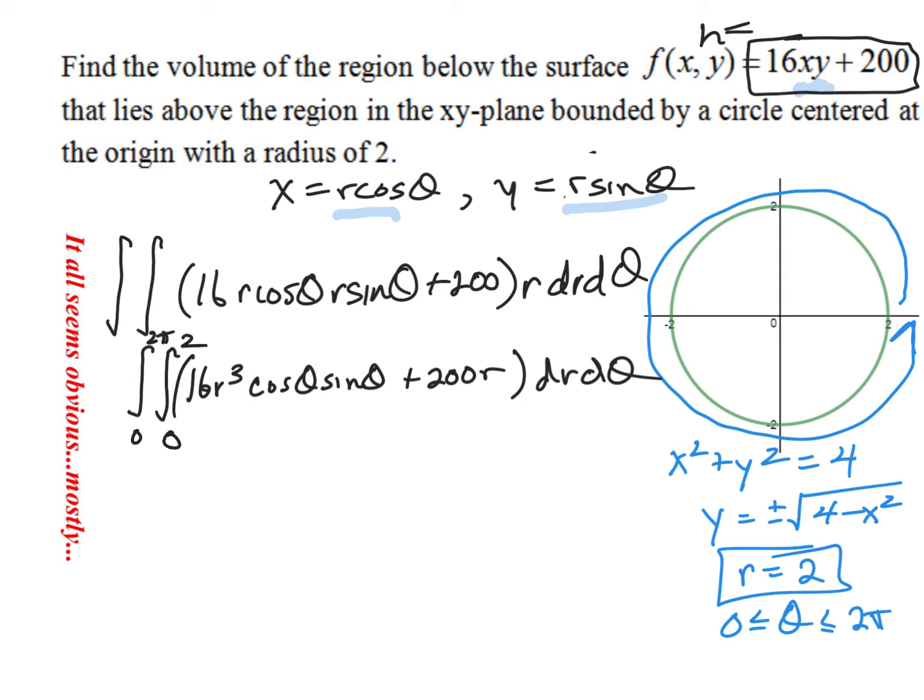And you can absolutely, you know, starting with r, this should be maybe the easier one. You can say, all right, raise the power, divide. So 4 r to the fourth cosine theta sine theta plus 100 r squared. Evaluate this at 2 and at 0. So, you know, so plug that in.